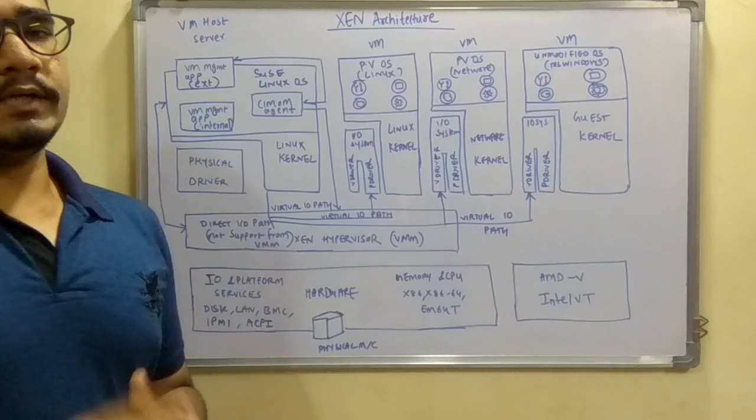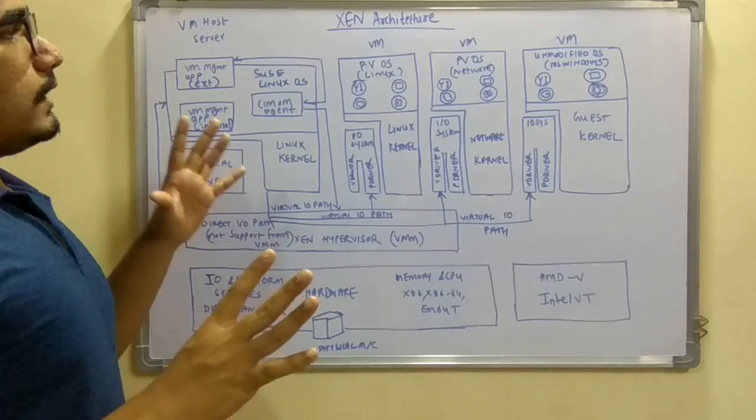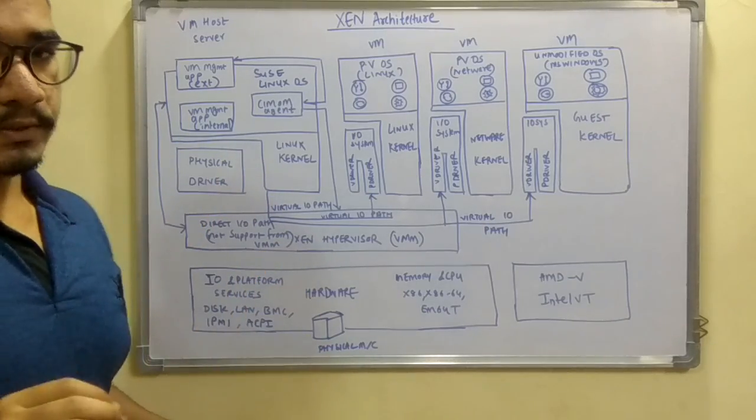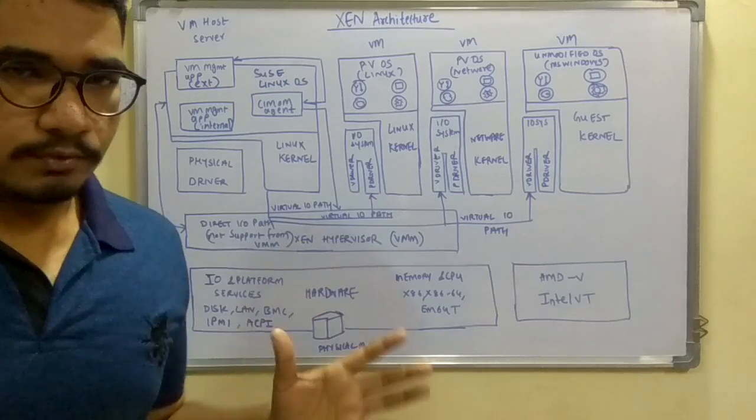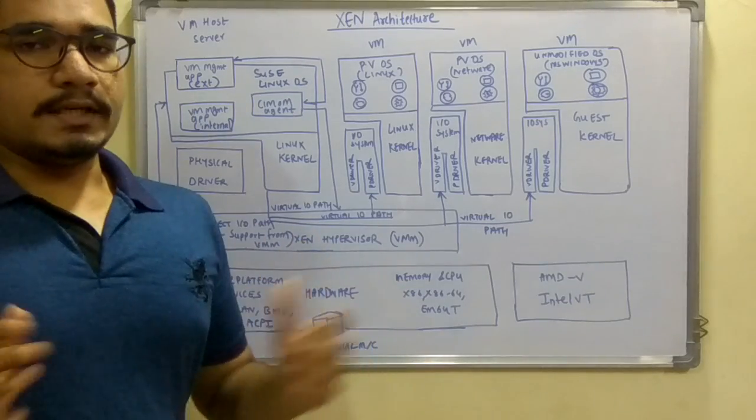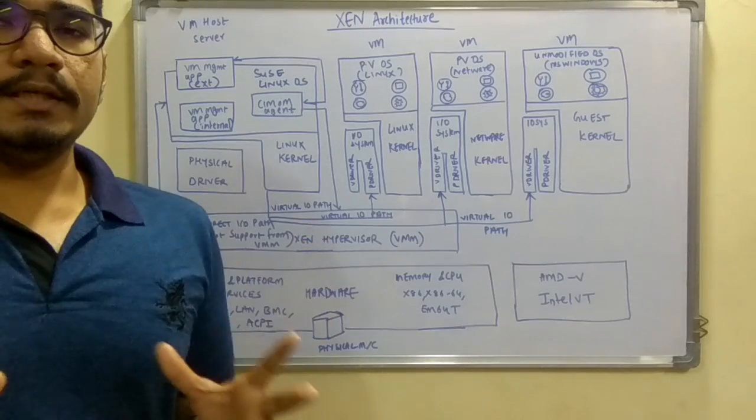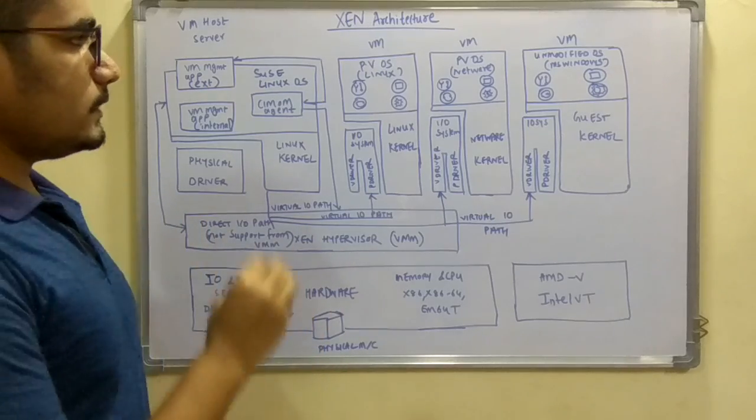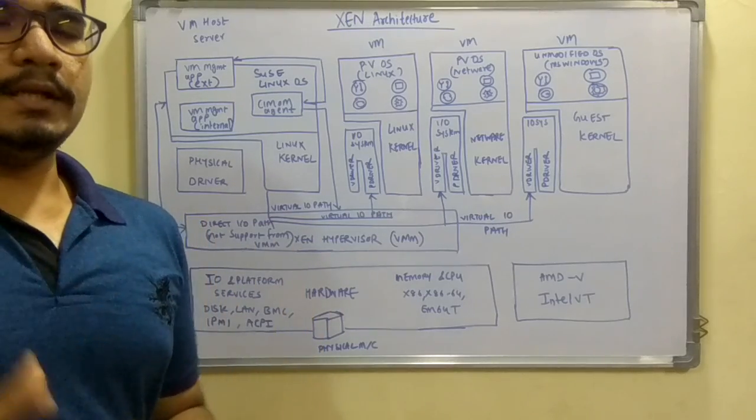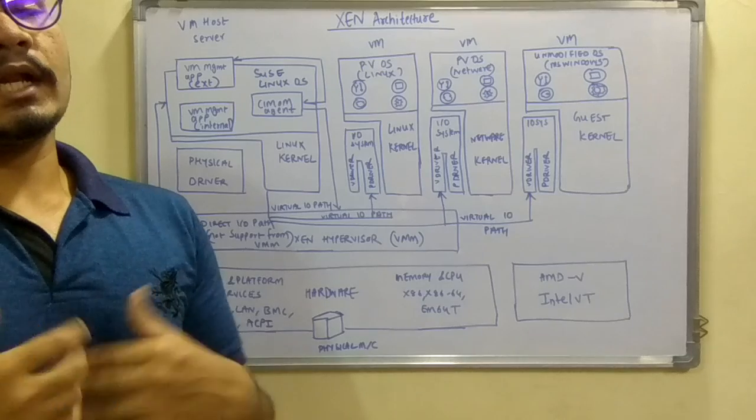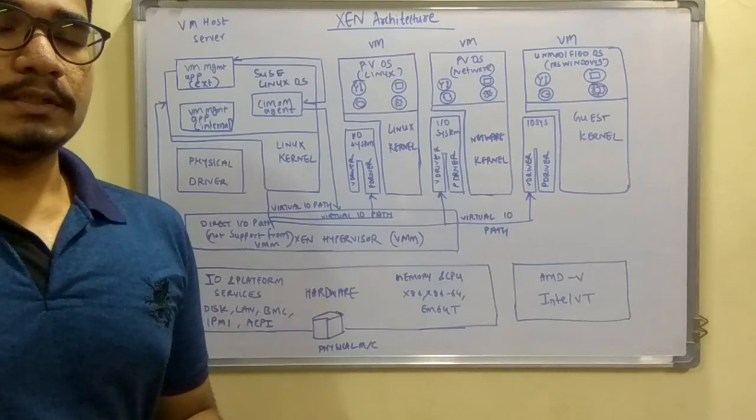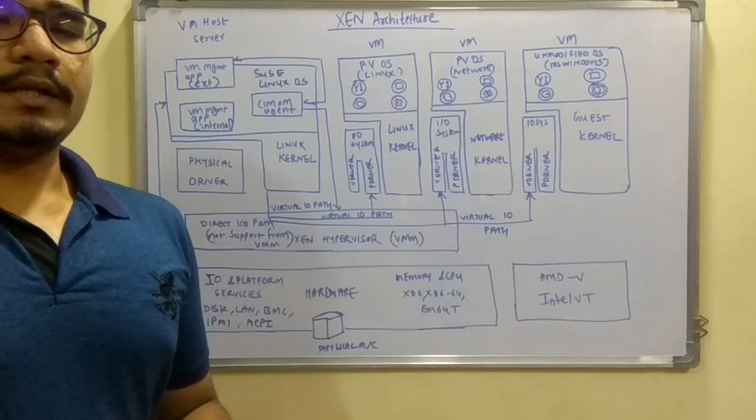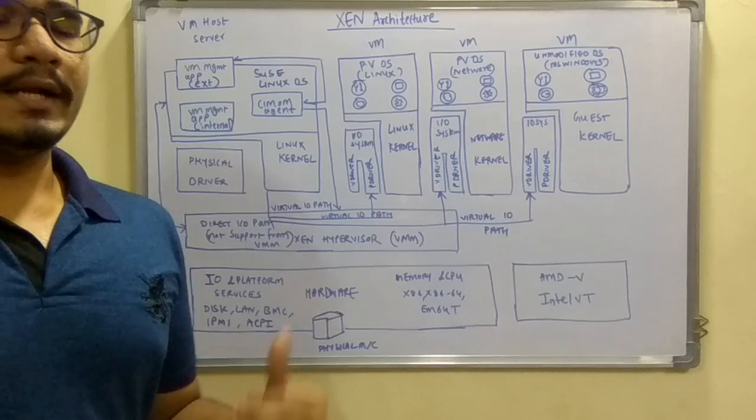The Xen architecture was initially developed at Cambridge University. This Xen hypervisor is basically based on microkernel design because it mainly can operate or run different kinds of operating systems in parallel, not in a pipeline manner but in parallel at the same time.